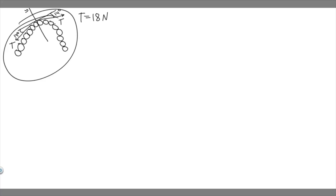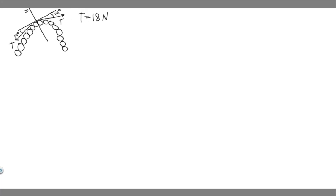So this is the image from the book. We have these teeth, and we have these tension forces — one going this way and one going this way on this tooth — and we're trying to find the magnitude of the net force. The tension in each of these is equal to 18 newtons. So how do we solve this problem?